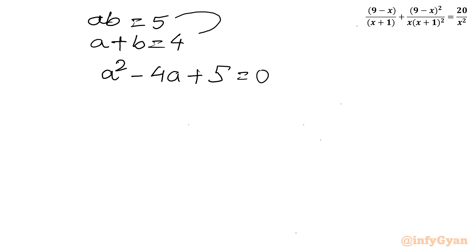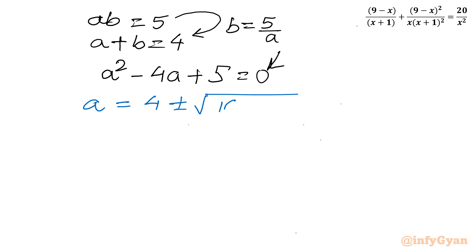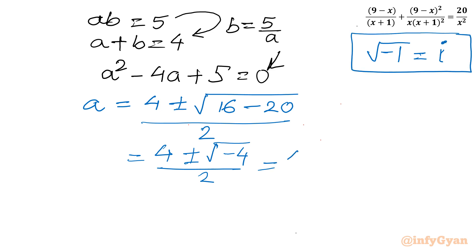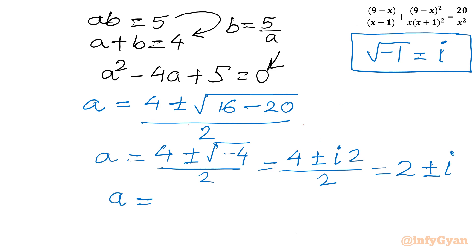Solving a² − 4a + 5 = 0 using the quadratic formula: a = (4 ± √(16−20))/2 = (4 ± √(−4))/2 = (4 ± 2i)/2 = 2 ± i. So from system 1 we get two complex solutions, x = 2 ± i.